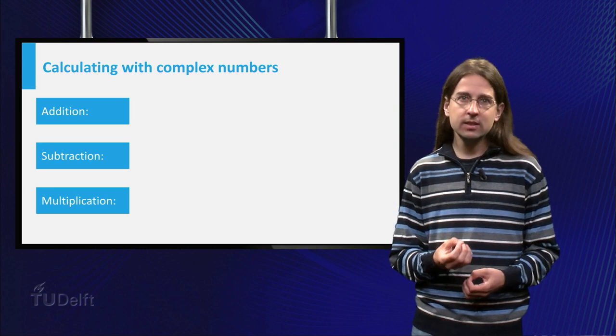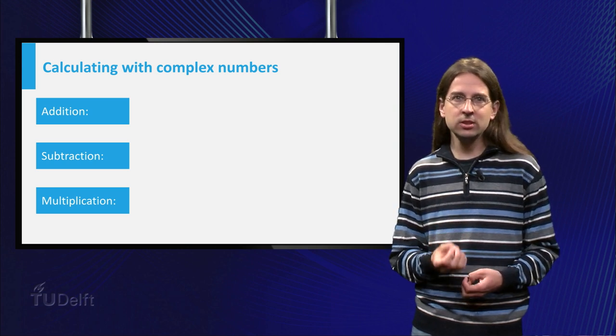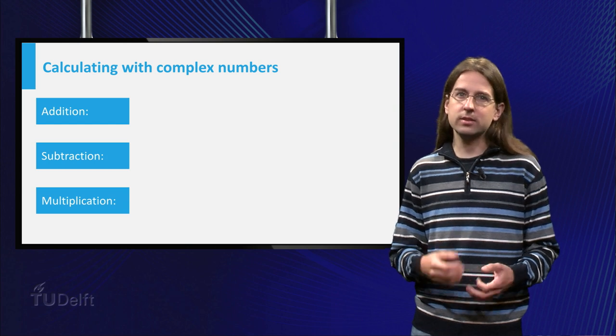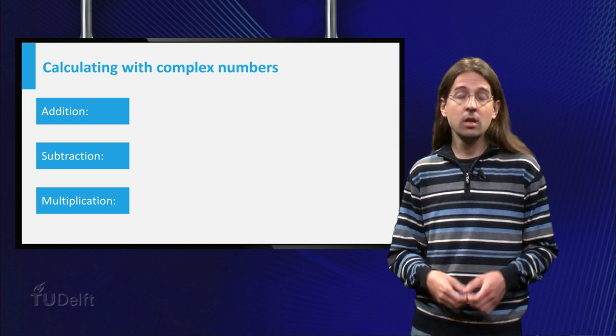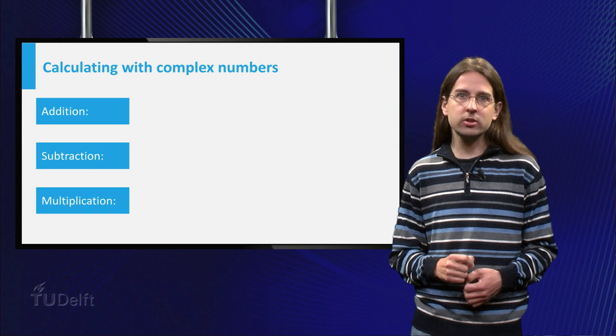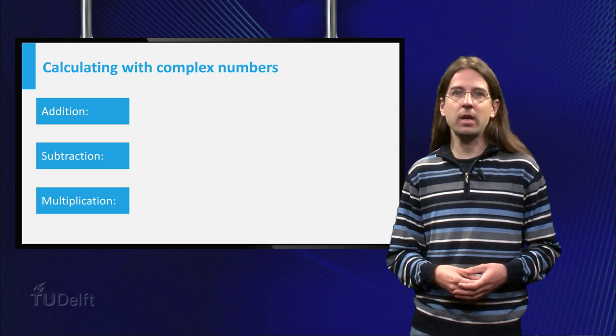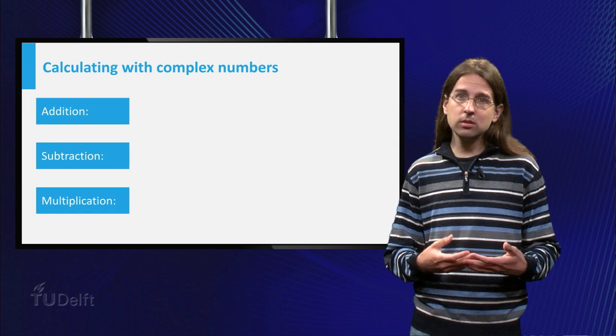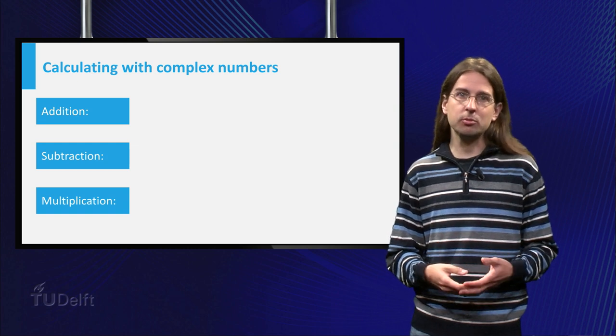The general idea is to just make the calculation assuming i is just any other number, and whenever you encounter i², you replace it by minus 1. Let us look how this works in some examples.